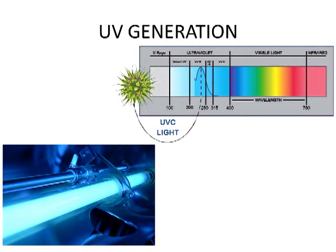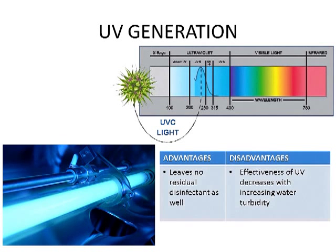UV generation: all plasmas which contain water will emit UV light. This UV light photolytically degrades organic compounds. UV rays produce charged particles in water such that charge accumulation occurs on the outer surface of the membrane of a bacterial cell. Subsequently, the electrostatic force on the membrane overcomes the tensile strength of the cell membrane, causing its rupture. One advantage of UV light is that it leaves no residual disinfectant. Its disadvantage is that its effectiveness decreases with increasing water turbidity.